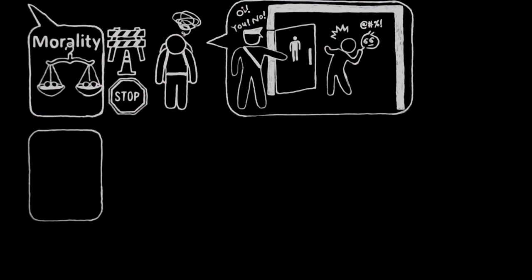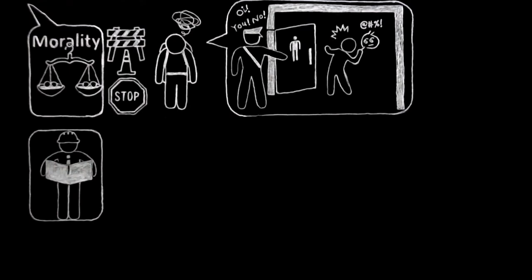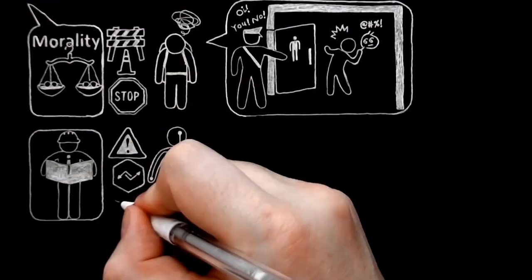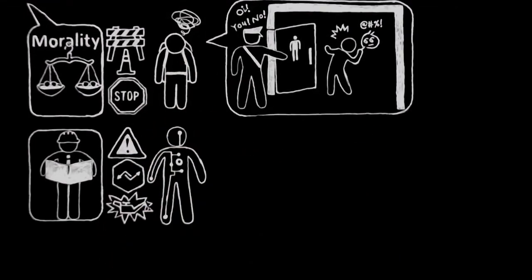In reality, moral rules are directions for running the human machine. Every moral rule is there to prevent a breakdown or a strain or a friction in the running of that machine.